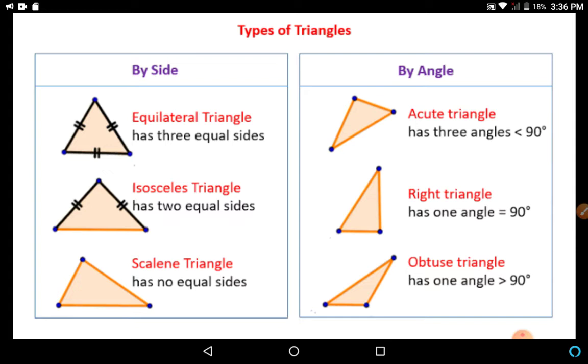In right hand side, you can see acute triangle. It has all the three angles less than 90. Right angle triangles. It has one angle 90 degree. Obtuse triangle.